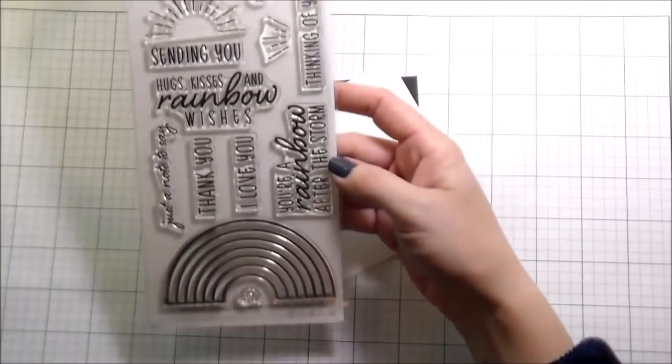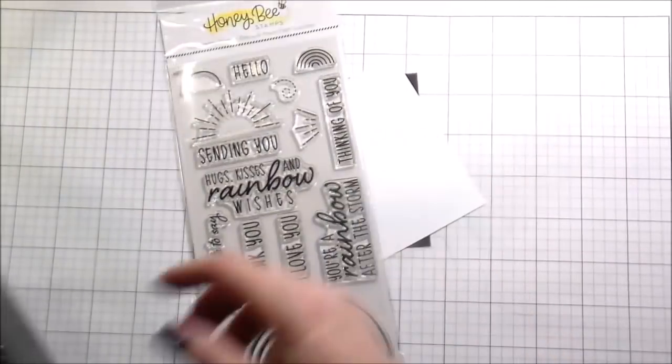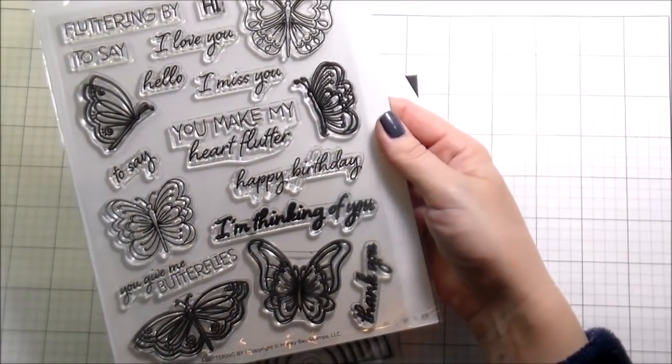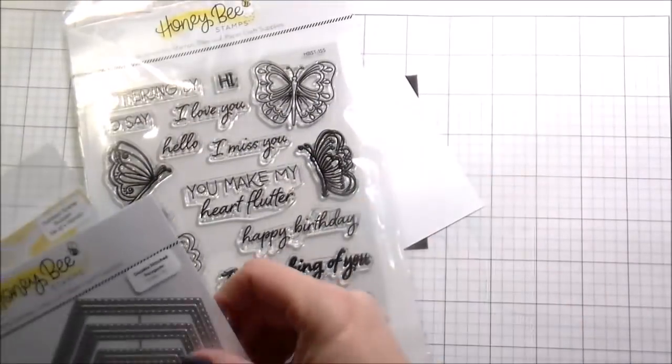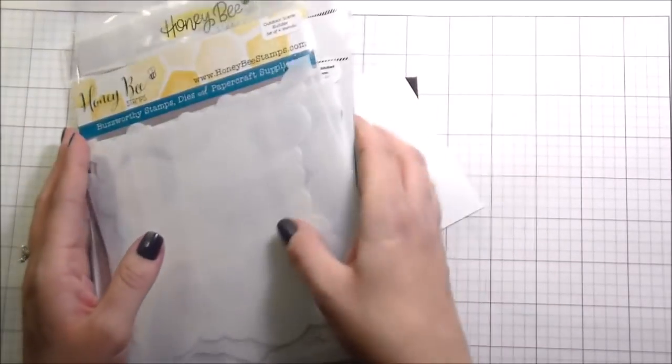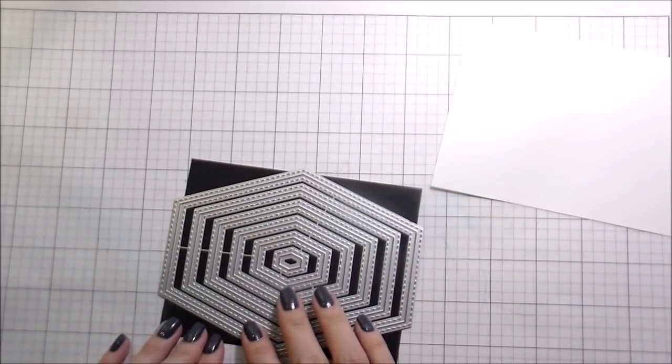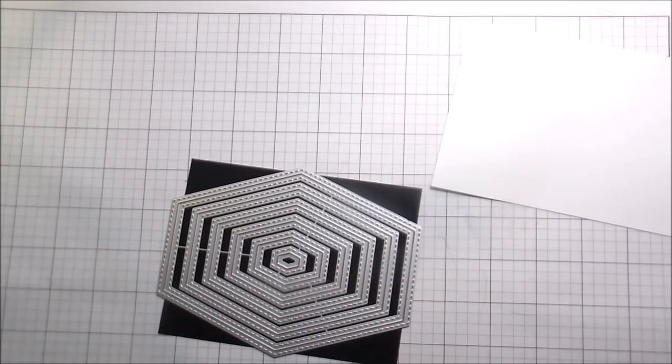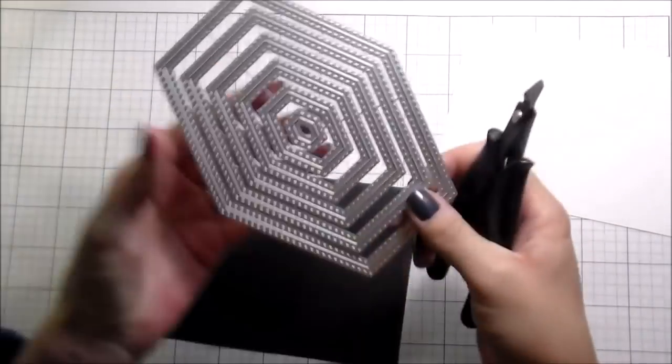Hi guys, it's Kelly Ledovola here and I'm back with another video for Honey Bee Stamps. Today we are going to be using the Rainbow Wishes stamps and dies, the Fluttering By stamps, the Outdoor Builder stencils, and the double-stitched polygons.